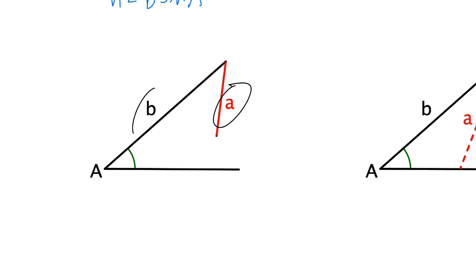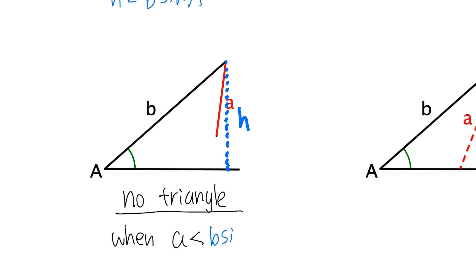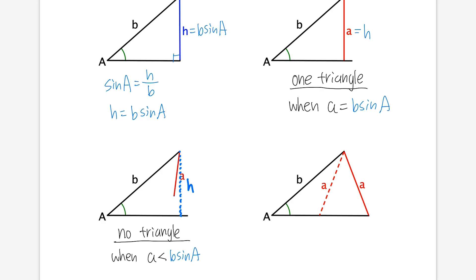If a is less than h, the side a is too short to reach the base, and no triangle can be formed. This is the impossible case.